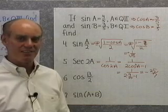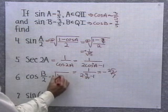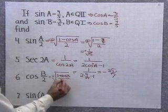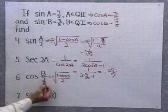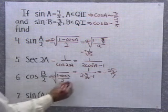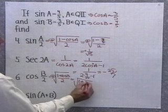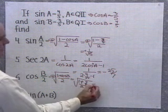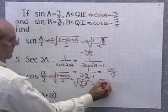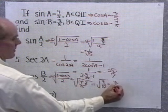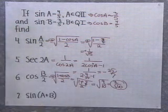For cosine b over 2: plus or minus the square root of 1 plus cosine b, all over 2. Since b terminates in quadrant 1, b over 2 also terminates in quadrant 1, so I'll choose the positive sign. I get the square root of 1 plus 4 fifths, all over 2. That's 5 fifths plus 4 fifths equals 9 fifths, divided by 2 is 9 tenths. The square root of 9 tenths gives 3 over the square root of 10.